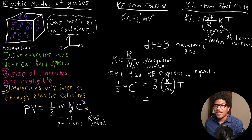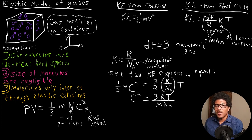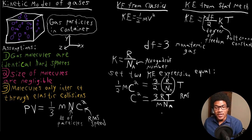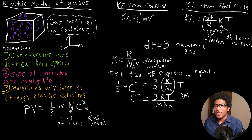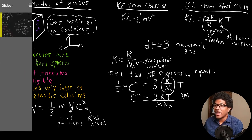If we isolate C squared, we get the following expression: C squared equals 3RT divided by (M × N_A). This is your equation for the root mean square speed — the RMS equation — where you can actually calculate the root mean square velocity.